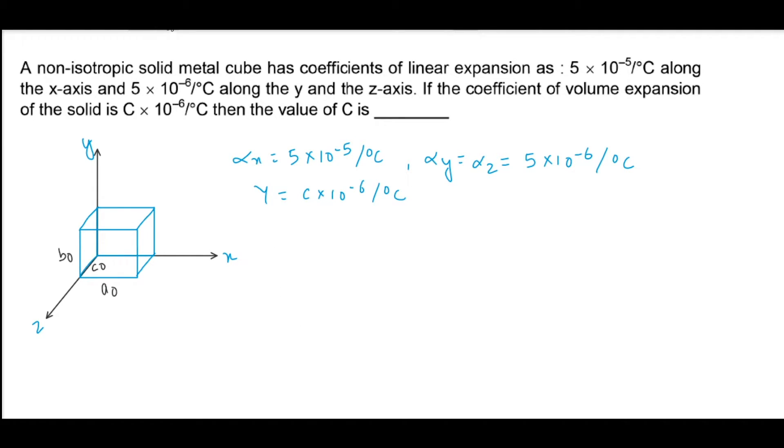So the new length a would be a0 times 1 plus alpha x into T, and b would be b0 times 1 plus alpha y into T, and c would be c0 times 1 plus alpha z into T.